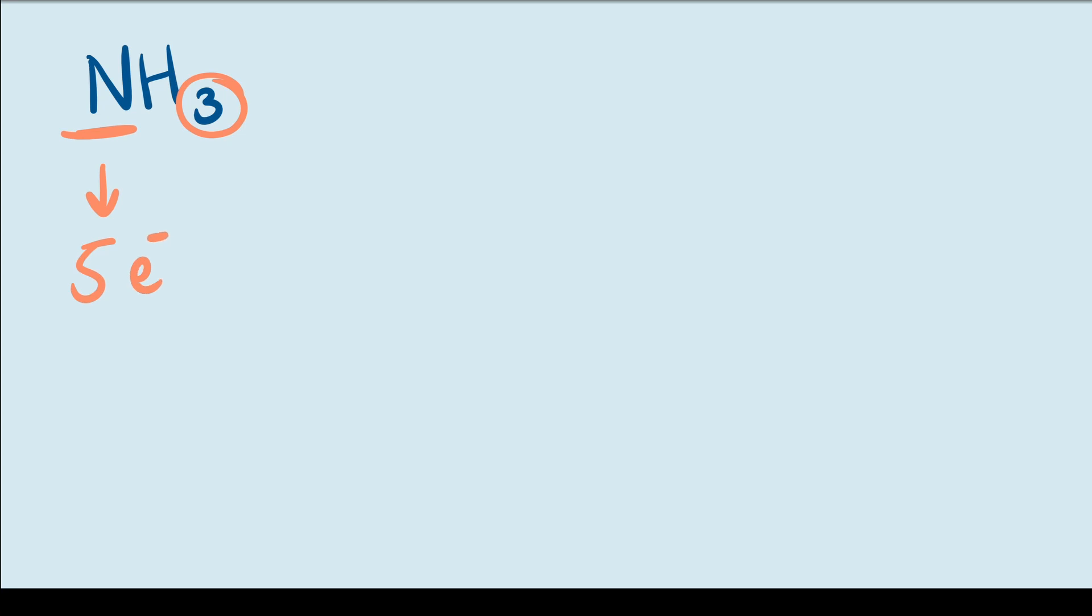Hydrogen atoms have one electron each and since we have three of them, I am going to write a three here. Adding these two up gives us a total of eight valence electrons.